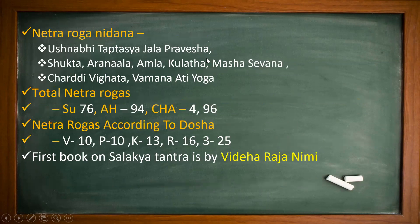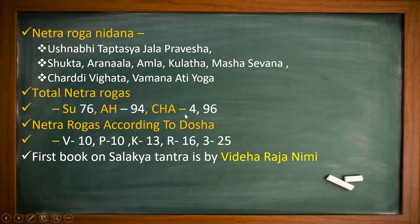Roga Nidana: Ushnabhi Taptasya Jala Pravesha, Shukta, Aranala, Amla, Kulattha-Masha Sevana, Chardivighata, Vamana Adiyoga. Total Netra Rogas: Sushruta — 76, Ashtanga Hridaya — 94, Charaka — 4 and 96. Netra Roga by Dosha: Vatajam and Pittajam — 10 each, Kaphaja — 13, Raktajam — 16, Tridoshika — 25. First book on Shalakya Tantra is by Videharaja Nimi.